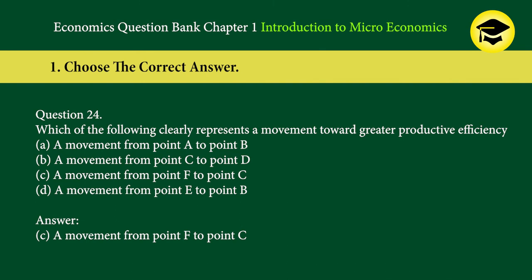Question 24: Which of the following clearly represents a movement toward greater productive efficiency? A. A movement from point A to point B, B. A movement from point C to point D, C. A movement from point F to point C, D. A movement from point A to point B. Answer: C. A movement from point F to point C.